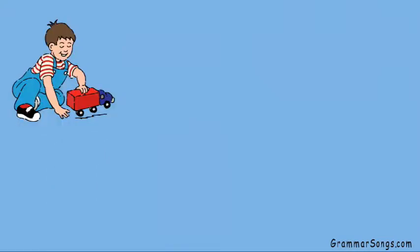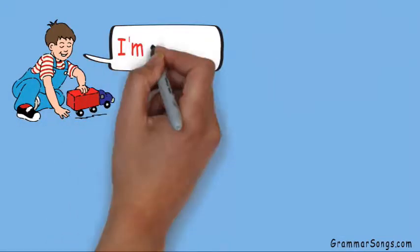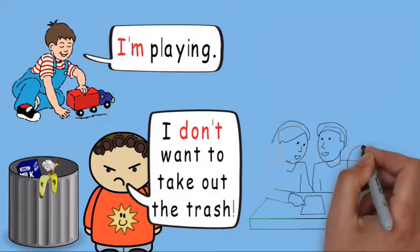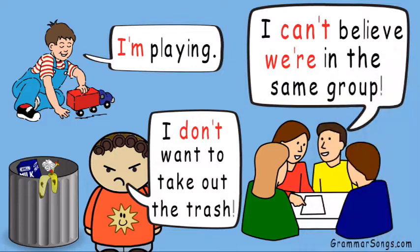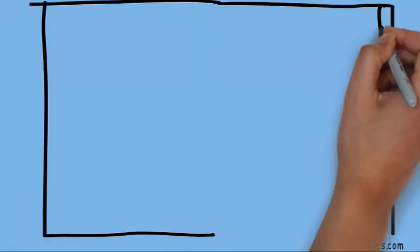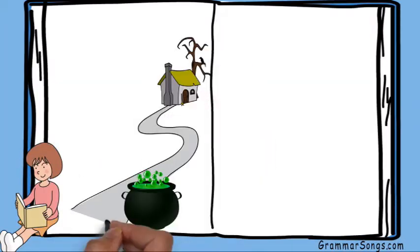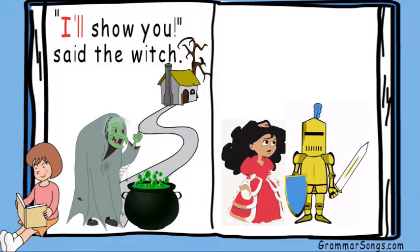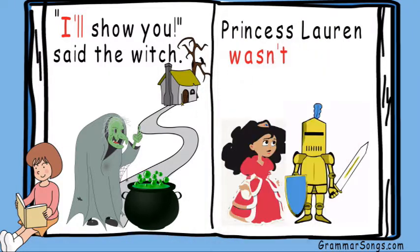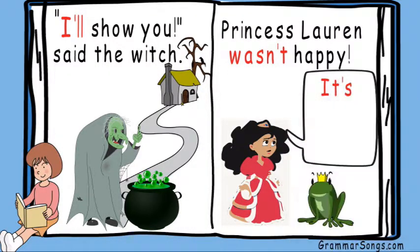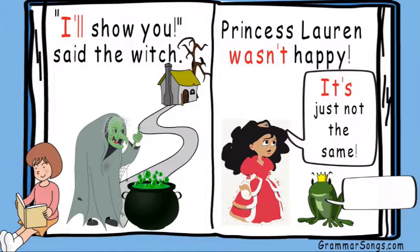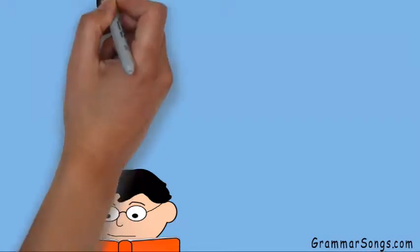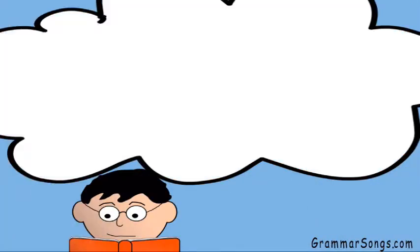We use contractions every day when we speak: I'm playing. I don't want to take out the trash. I can't believe we're in the same group. And we can recognize contractions when we read — like in sentences such as 'I'll show you, said the witch' and 'Princess Lauren wasn't happy' and 'It's just not the same.' It is important to understand contractions when we read so that we understand what message the author is sending.